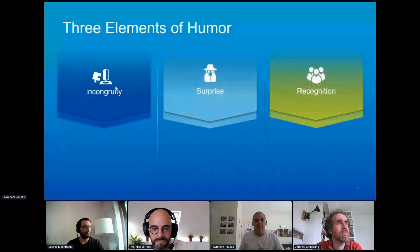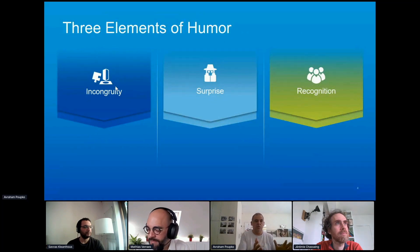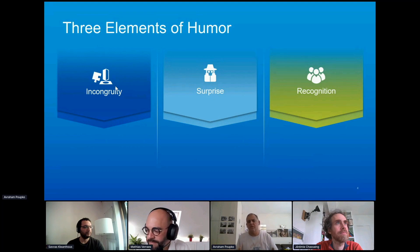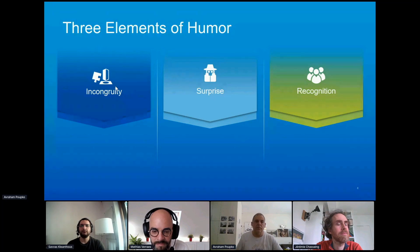I'm going to talk about three elements of humor. There are many ways to look at the elements of humor. The three ways I decided to divide humor are: incongruity, surprise, and recognition. And within each of them you have the usual building blocks of humor, which are cynicism, irony, wordplay, exaggeration, sarcasm, and so forth.